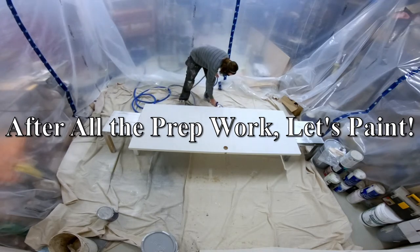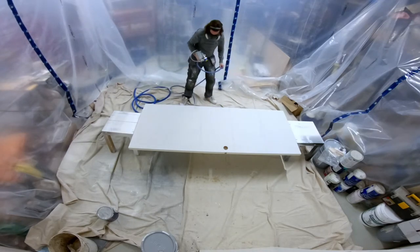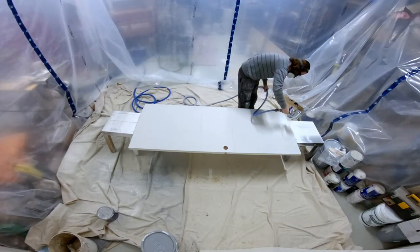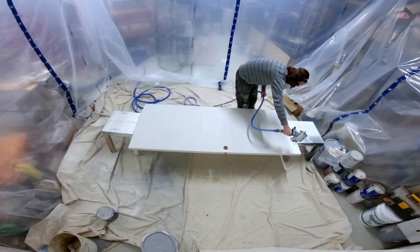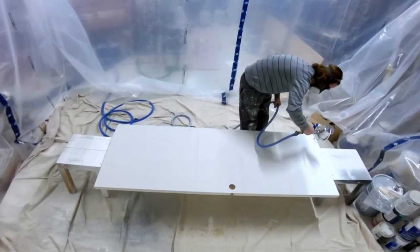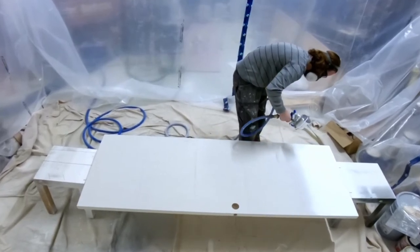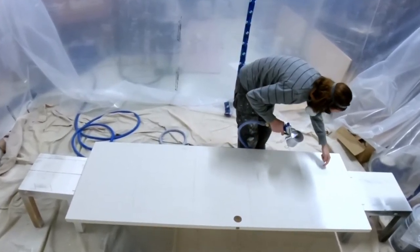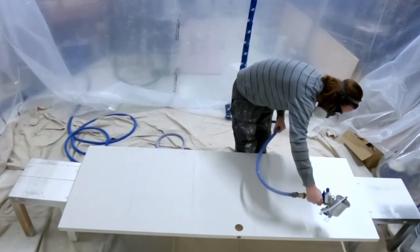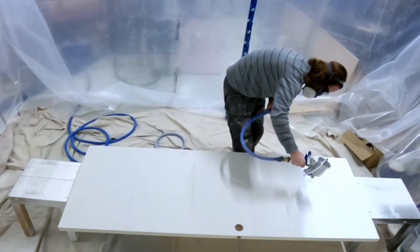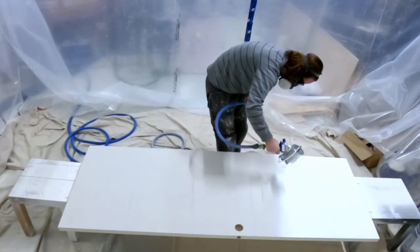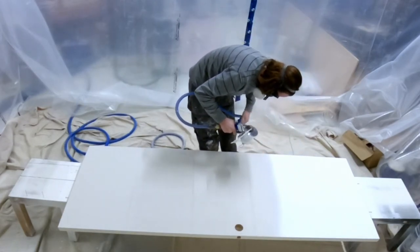All right, so after all that prep work we can finally get down to some painting. What I'm using here for a spray gun is a Fuji Q5 turbine sprayer. This is kind of a higher end sprayer I would say, especially for the DIY market. They do make some other cheaper units or more cost effective I guess. So they've got a Q3, a Q4, this is a Q5, and basically what that is designating is how many fans it has in the unit and the overall pressure and air volume that it can push.